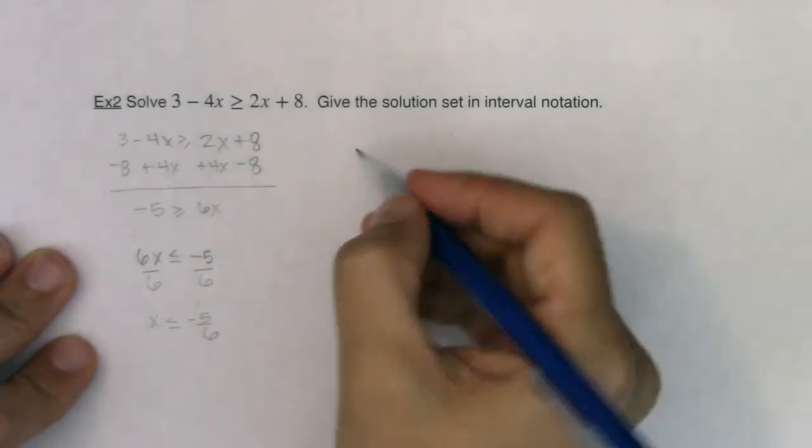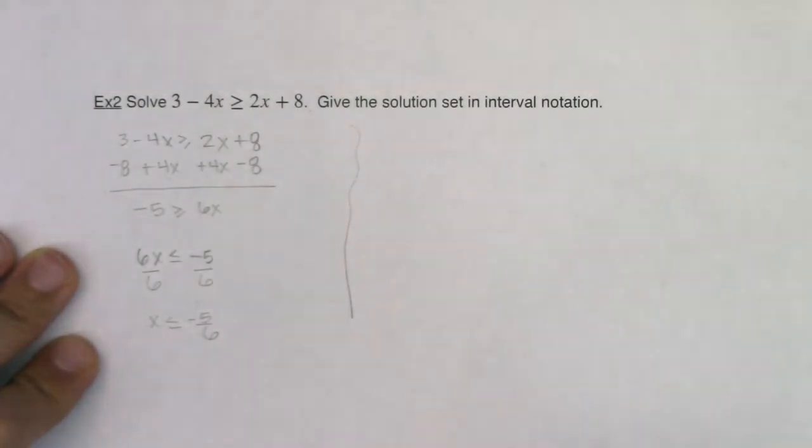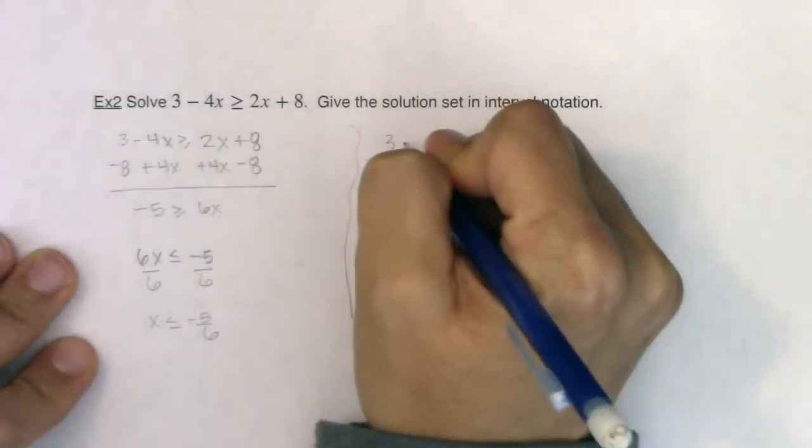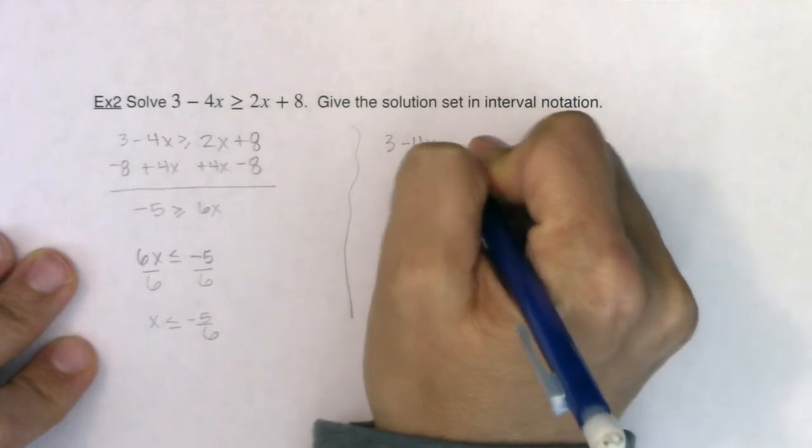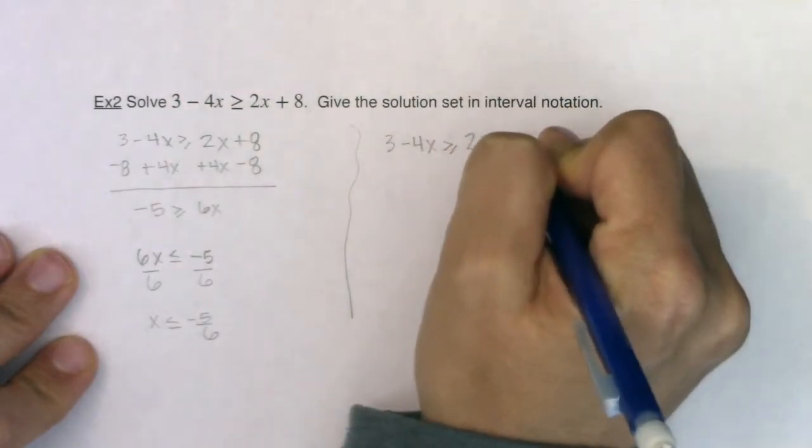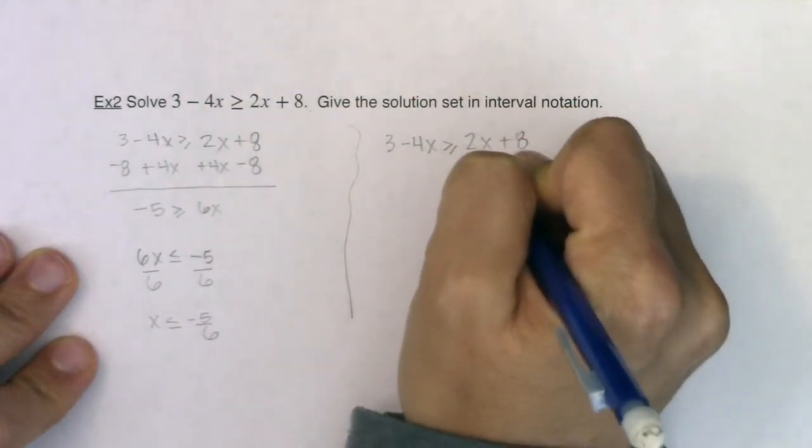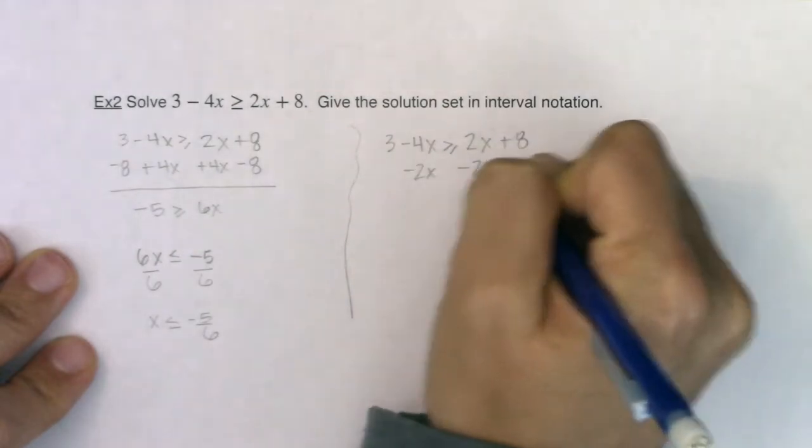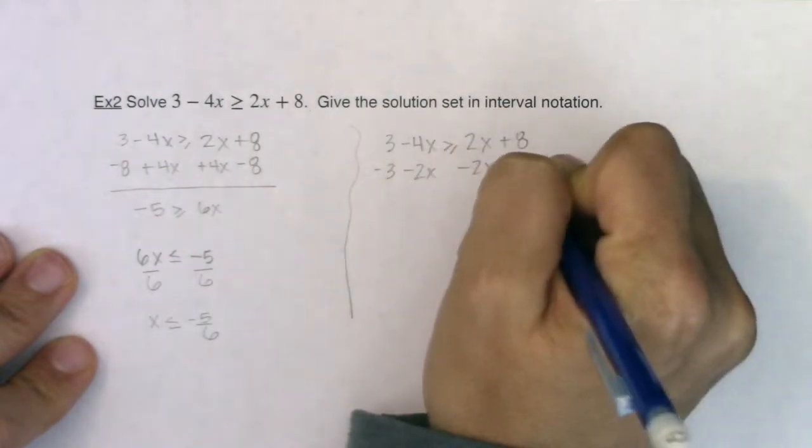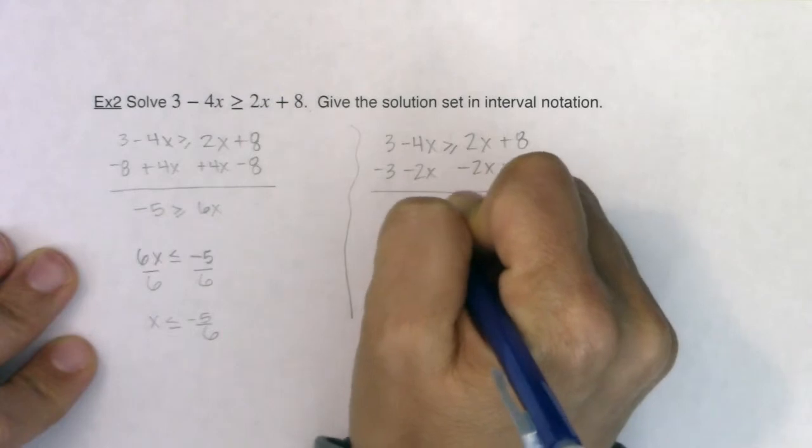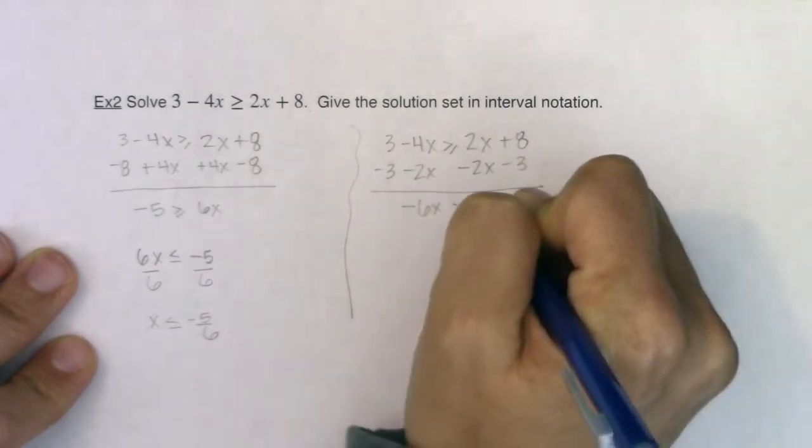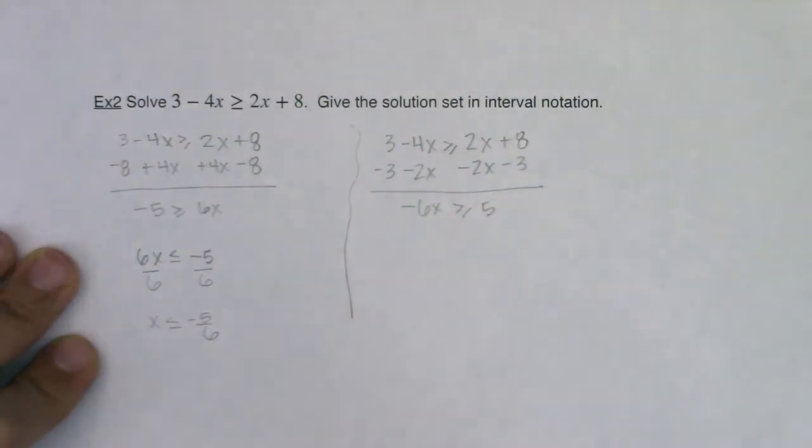Okay, now let's say you wanted to do it the way I think most of you are used to. You say well I've got 3 minus 4x has to be greater than or equal to 2x plus 8. So you're going to subtract 2x here and then subtract 3, and I will get negative 6x has to be greater than or equal to positive 5.